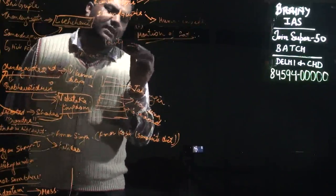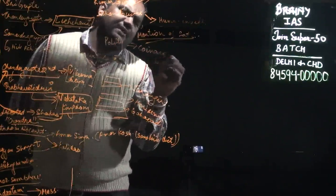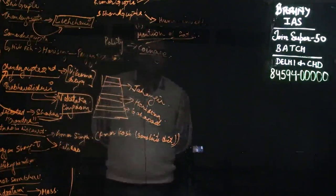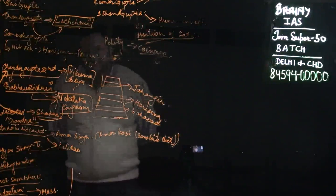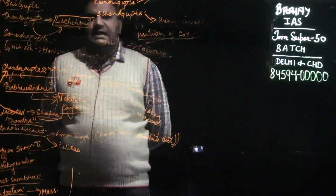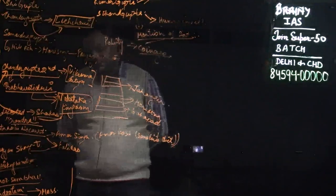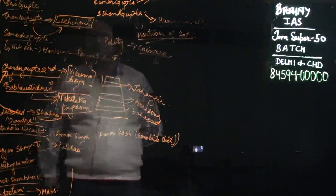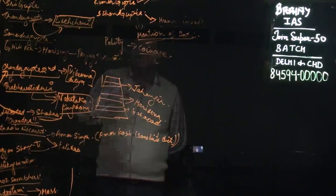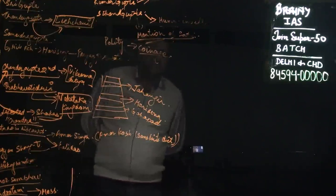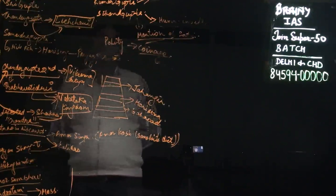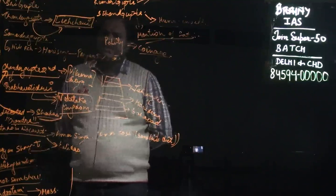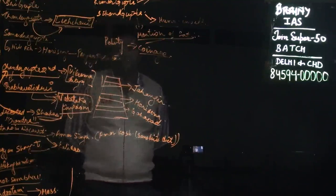Another important aspect is the coinage problem. Guptas issued the maximum number of gold coins, but this doesn't show prosperity because gold coins could never be used in small transactions, only larger ones. This was beyond the reach of common people, hence there was a coinage problem that led to the downfall of the Gupta period.